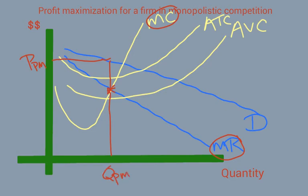And if we wanted to figure out the total profit, we've got to find the average total cost. We can draw a straight line across, and this would be our profit area. So again, very similar to the monopoly situation except that the demand curve is a little bit flatter.